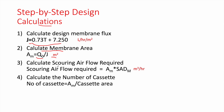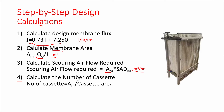Step 3: Calculate the scouring airflow required by the MBR modules — equal to AM times SAD (0.3), giving a value in cubic meters per hour of air injected through coarse bubble diffusers by blowers. Step 4: Calculate the number of cassettes by dividing the total membrane area by the area per cassette, which you obtain from the manufacturer.